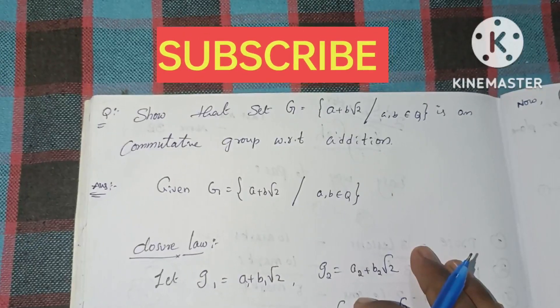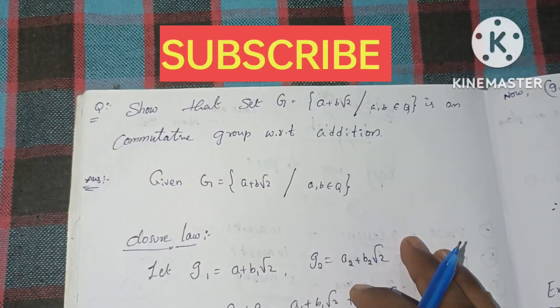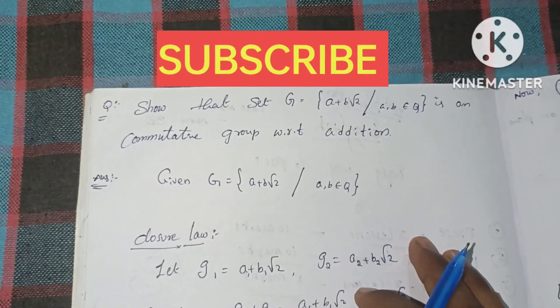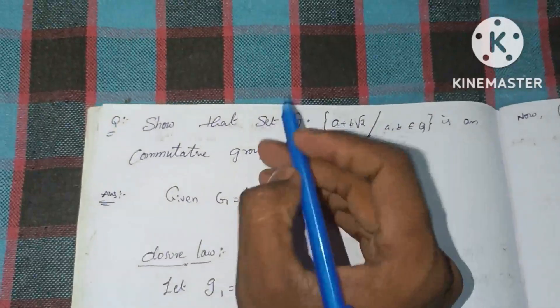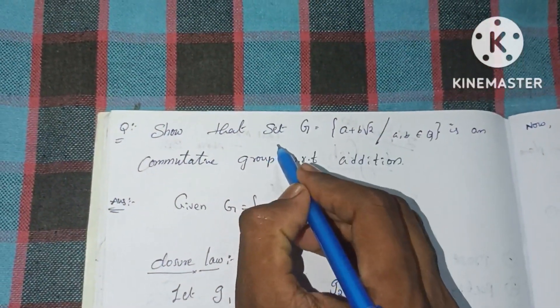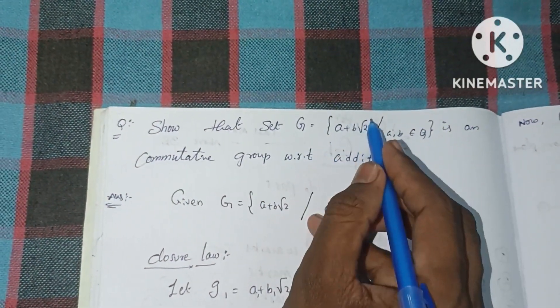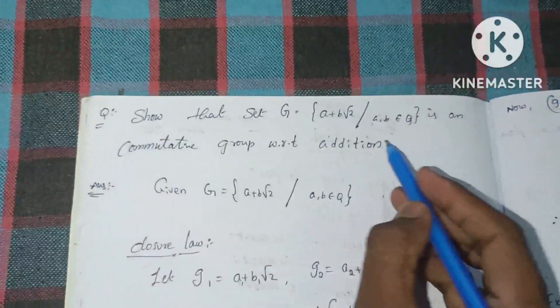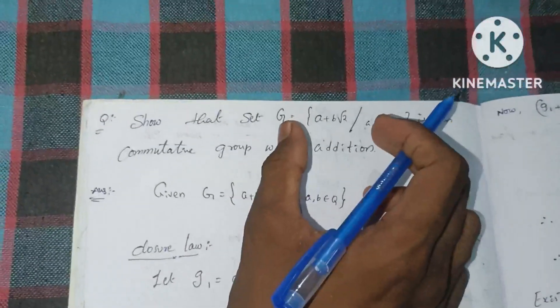If you don't like the video, please like the video and support our channel. We are going to show that set G is equal to a plus b root 2, where a comma b belongs to Q.